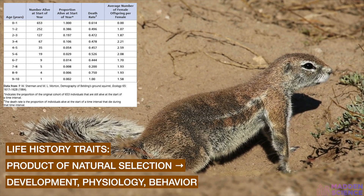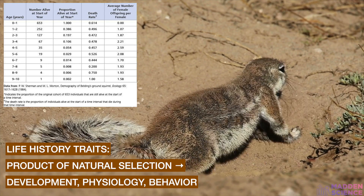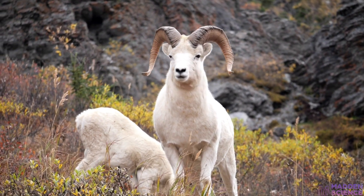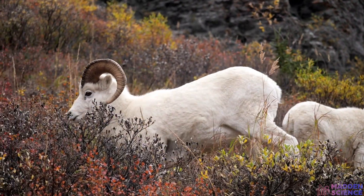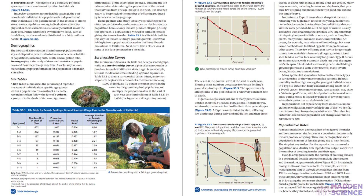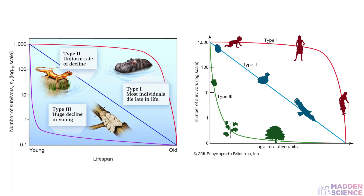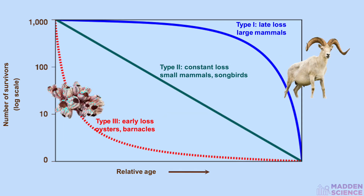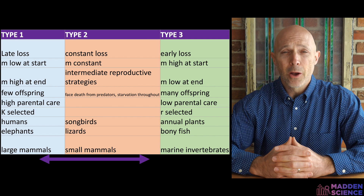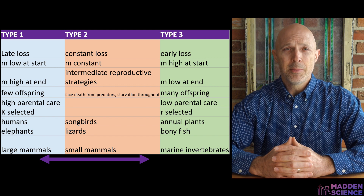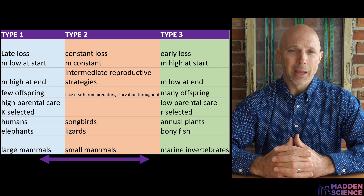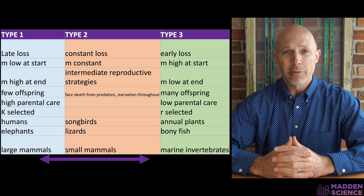Life history traits are the product of natural selection, reflected in development, physiology, and behavior — when reproduction begins, how often organisms reproduce, and the number of offspring. Life table data can be represented as a graph. Here are some classic examples from your biology textbook. A quick breakdown between the types reveals generalizations between type 1, 2, and 3, yielding information on death timing, mortality, baby numbers, parental involvement, K versus R strategies, and examples.